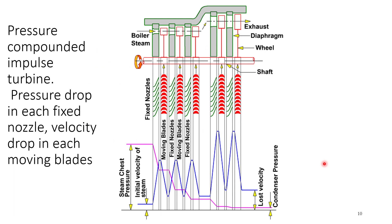In the Curtis wheel arrangement, when steam enters the fixed nozzle the pressure drops. In the moving blade, pressure is constant while velocity decreases. When the steam moves to the fixed nozzle in the second stage, pressure drops again and velocity increases, which is then reduced again in the moving blade. This sequence repeats stage after stage until the last stage of the turbine.